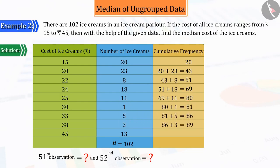Thus, a new column is formed in which the last row consists of 102 ice creams that are priced up to Rs. 45. This column is known as the cumulative frequency column.